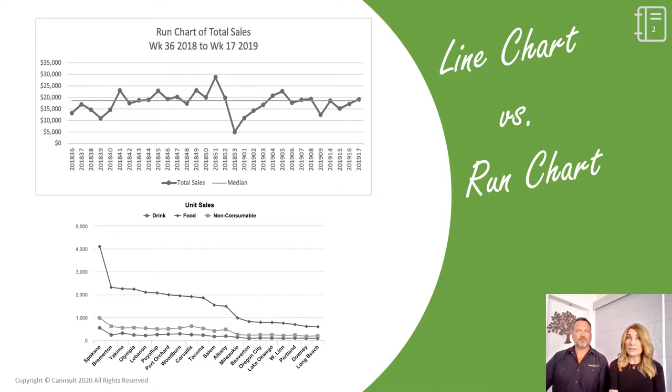To properly analyze a run chart, it should have between 24 and 30 data points. A run chart can accommodate discrete or continuous data on the y-axis. And the key to interpreting or understanding these patterns is the inclusion of a median line.